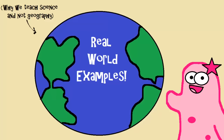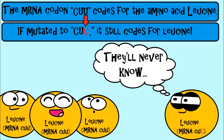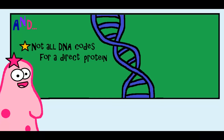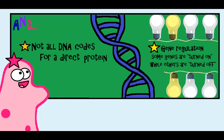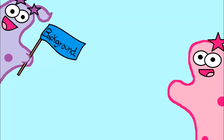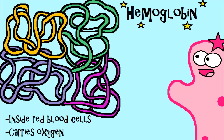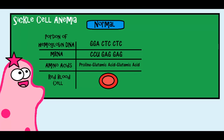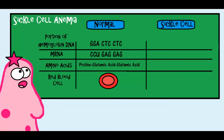Let's talk about some real life examples of mutations. Remember, a lot of times mutations can have a neutral effect — not all of your DNA codes for a direct protein, and other genes can influence whether those genes are turned on or off. Let's talk about sickle cell anemia. Hemoglobin is a protein in your red blood cells that helps you carry oxygen. In sickle cell anemia, the gene that codes for hemoglobin is mutated.